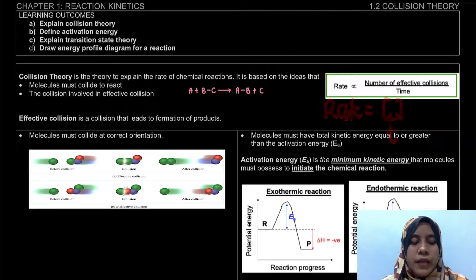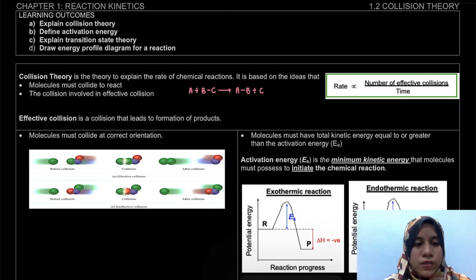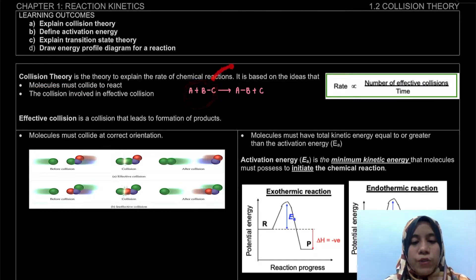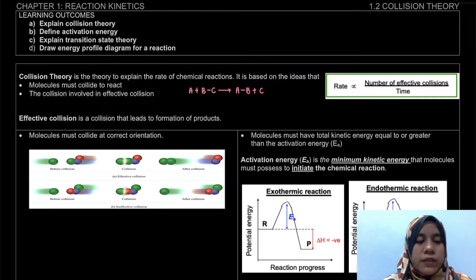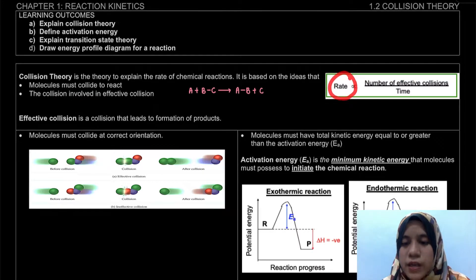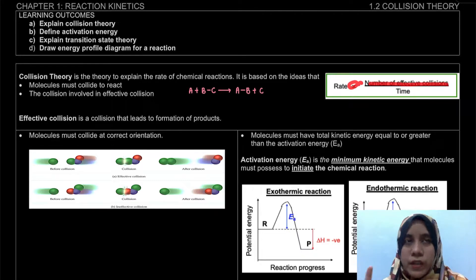Collision theory is based on two ideas. First, the molecule must collide to react — our reactants must collide to form our product. Second, when they collide, the collision involved must be an effective collision. That is why rate is directly proportional to the number of effective collisions.